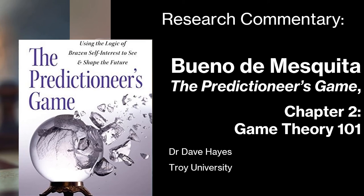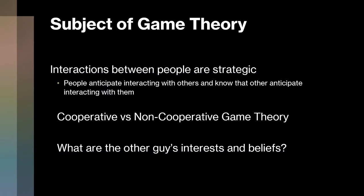In this presentation, I'm going to make some comments on Bruce Bueno de Mesquita's Chapter 2, 'Game Theory 101,' in The Predictioneer's Game. In this chapter, Bruce has started to talk to us about game theory, putting it in the context of science and making the point that game theory is an attempt to scientifically approach interactions between people. But the problem is, unlike physics where we have the interactions of particles, interactions between people are strategic — people anticipate interacting with others, and they know that others anticipate interacting with them, and so on.